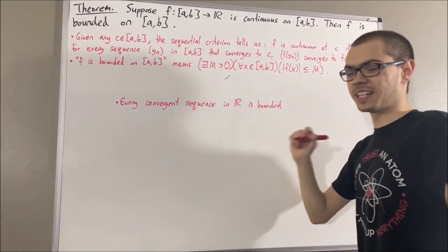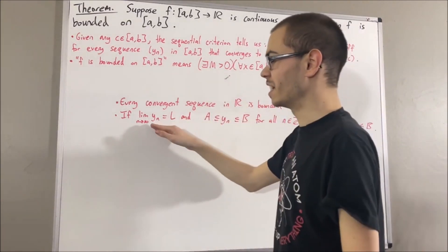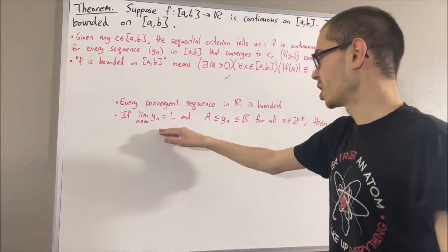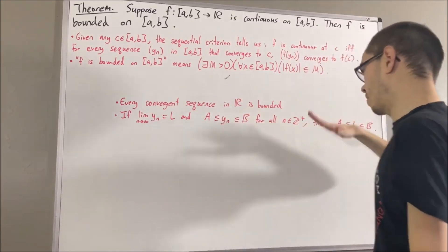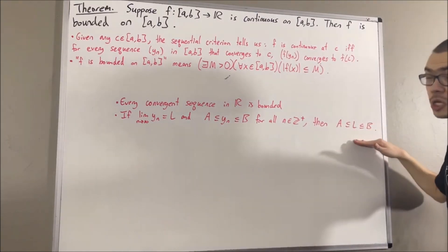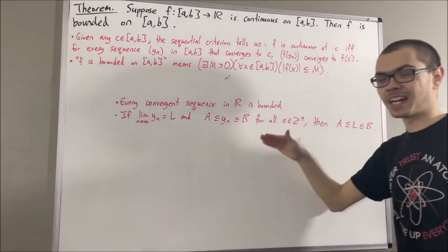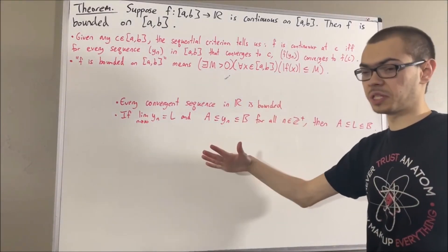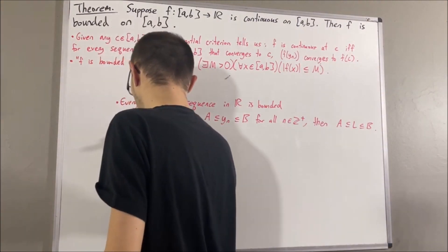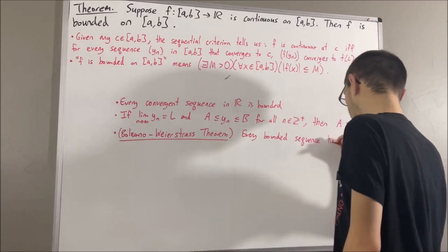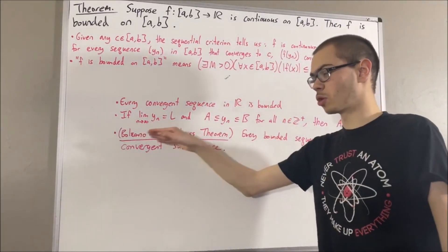One property is that every convergent sequence is bounded. Another property is: if yn is a convergent sequence of real numbers such that every term in the sequence lies between a and b, then the limit of the sequence also lies between a and b. We're also going to be using the fact that every bounded sequence has a convergent subsequence — this result is often referred to as the Bolzano-Weierstrass theorem.